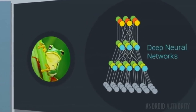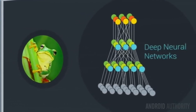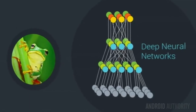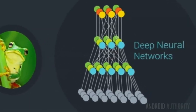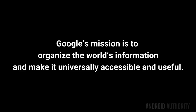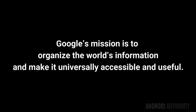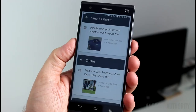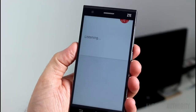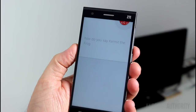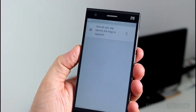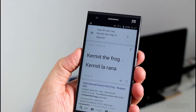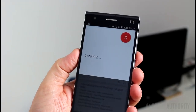During Google I/O 2015, it was explained in the keynote how much machine learning and deep neural networks are helping Google fulfill its core mission — to organize the world's information and make it universally accessible and useful. To that end, you can ask Google Now things like 'How do you say Kermit the Frog in Spanish?' And because of neural networks, Google is able to do voice recognition, natural language processing, and translation.